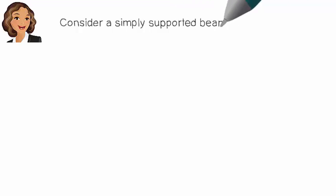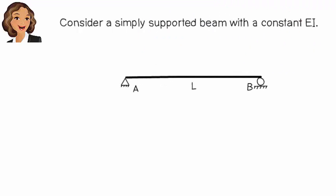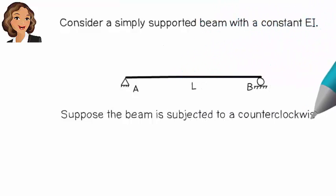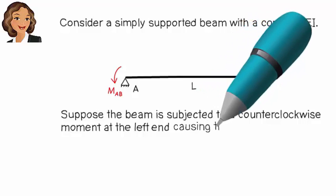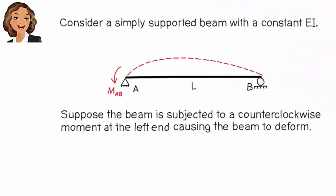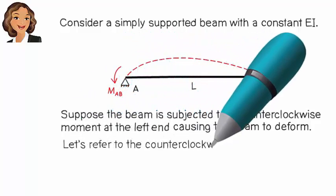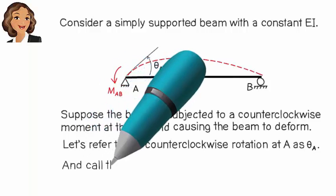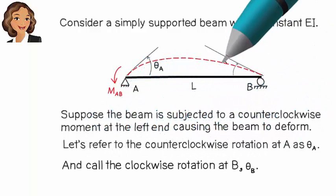Consider a simply supported beam with a constant EI. Suppose the beam is subjected to a counter-clockwise moment at the left end, causing the beam to deform like this. Let's refer to the counter-clockwise rotation at A as theta A and call the clockwise rotation at B theta B.